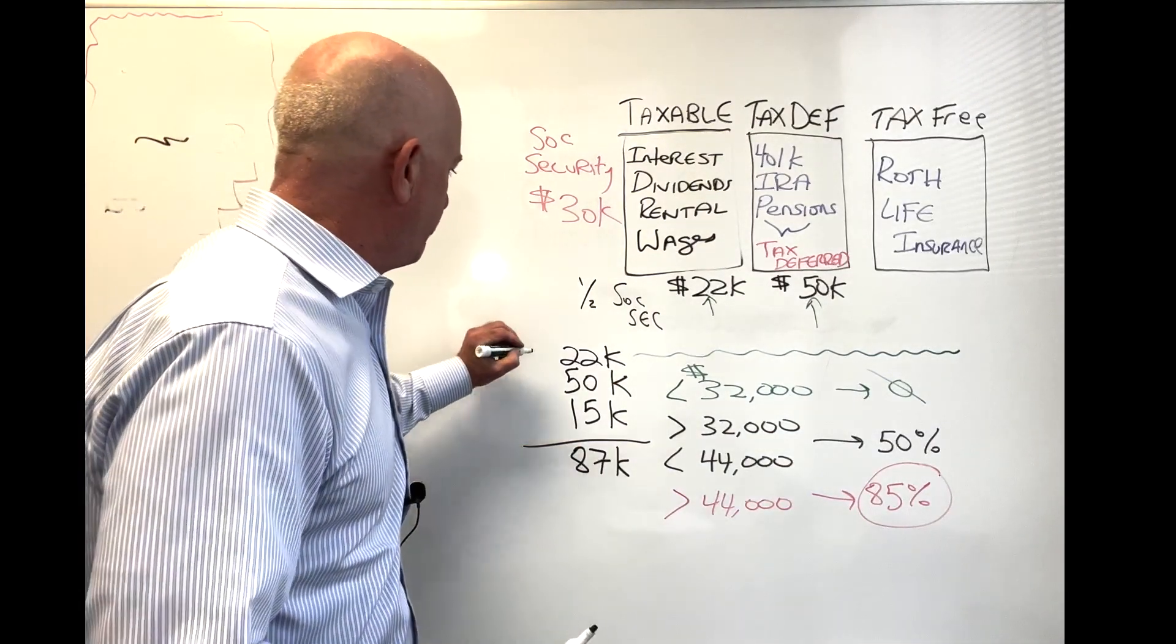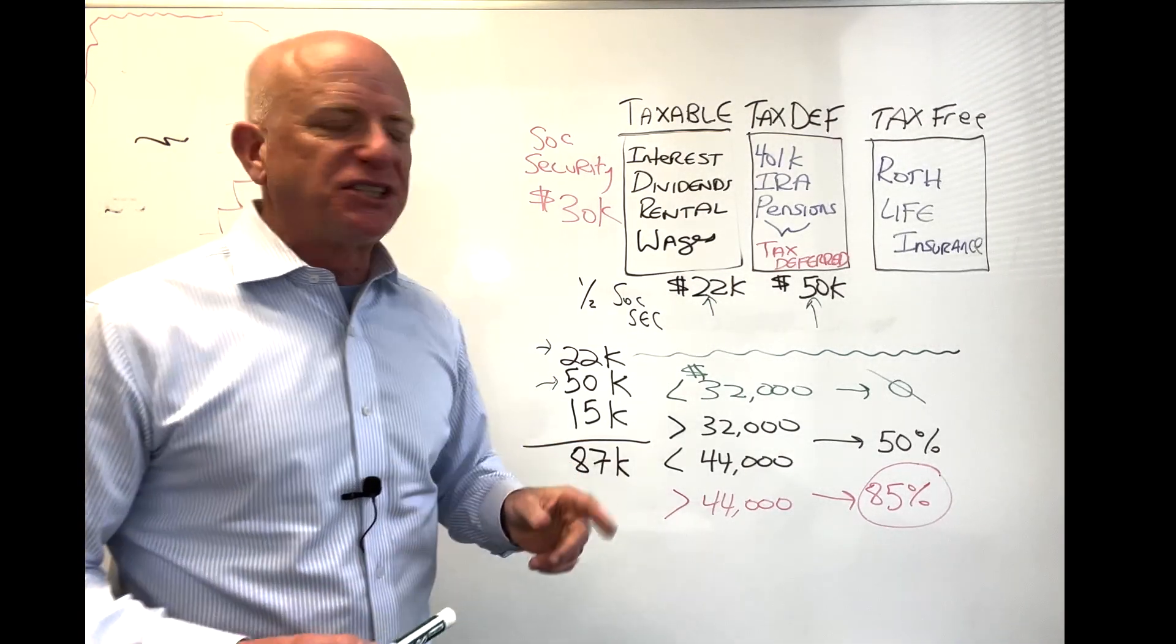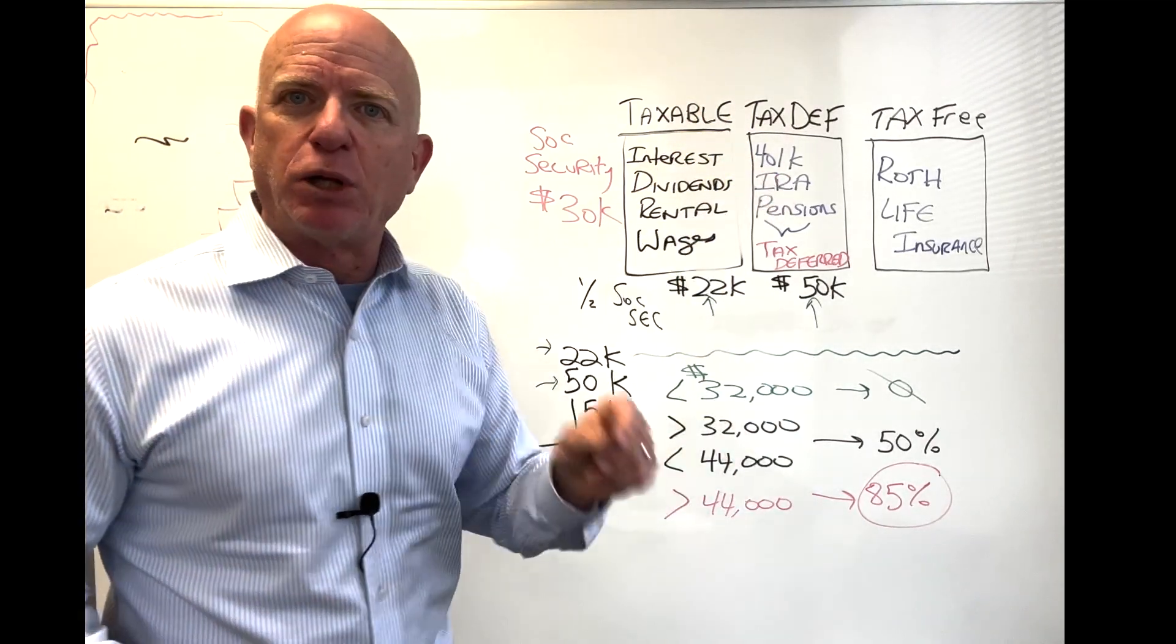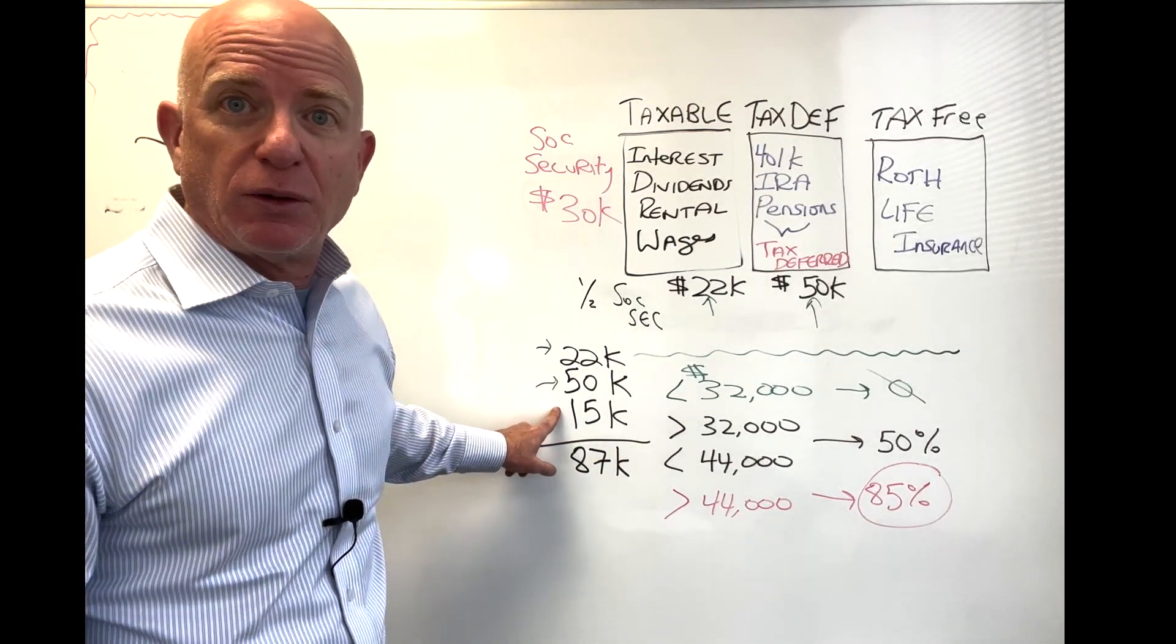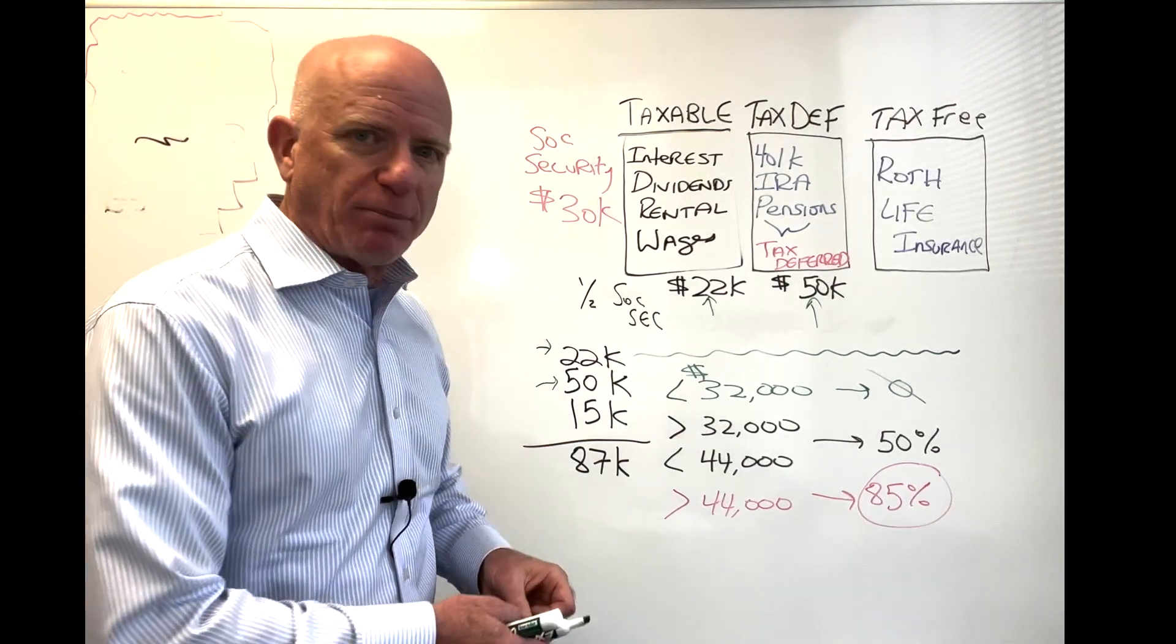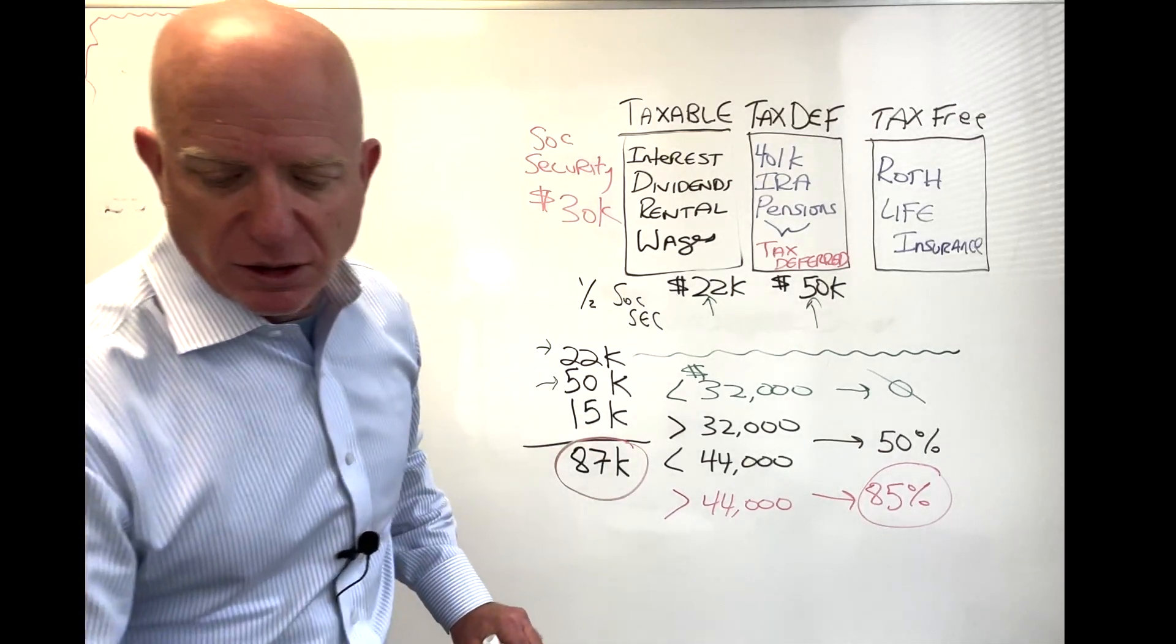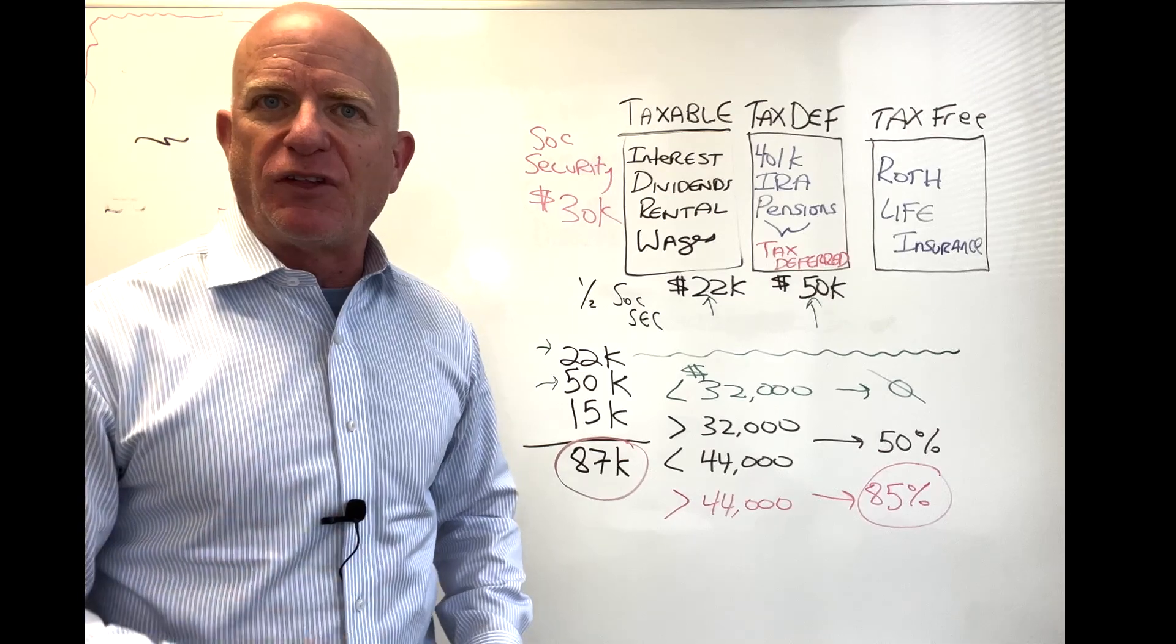So I have put these numbers right here, $22,000 and $50,000. Now let's say your Social Security benefit was $30,000. Remember the formula is A plus B plus one half of your Social Security. So $30,000 divided by 2, and I didn't need a calculator for this, is $15,000. So this means that our provisional income is $87,000. That's the provisional income.